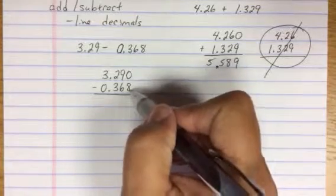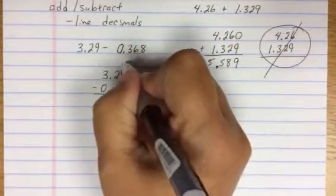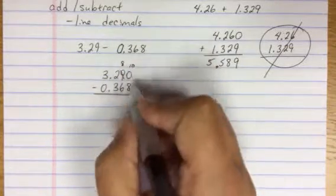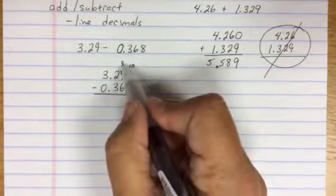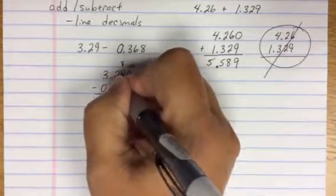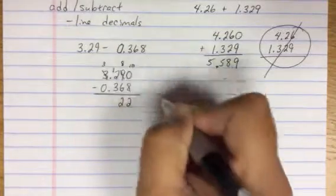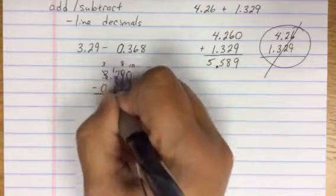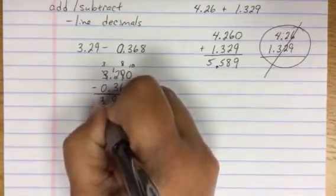So when we go to subtract, 0 minus 8, I can't do. So I'm going to go next door and borrow a 10, which is going to make my 9 into an 8. My 0 becomes 10. 10 minus 8 equals 2. 8 minus 6 is 2. Again, I have to go next door and borrow. So my 3 becomes a 2. My 2 becomes a 12. 12 minus 3 is 9. Decimals stay nice and lined up. 3 minus 0 is still 3.